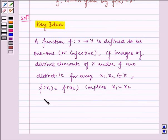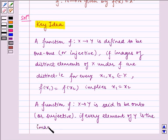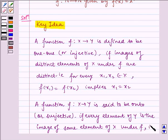And a function f from X to Y is said to be onto or surjective if every element of Y is the image of some element of X under f. That is,